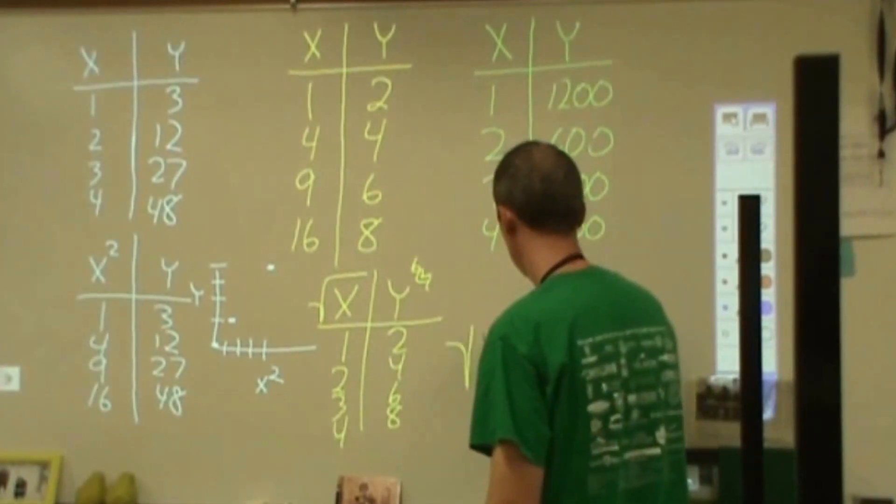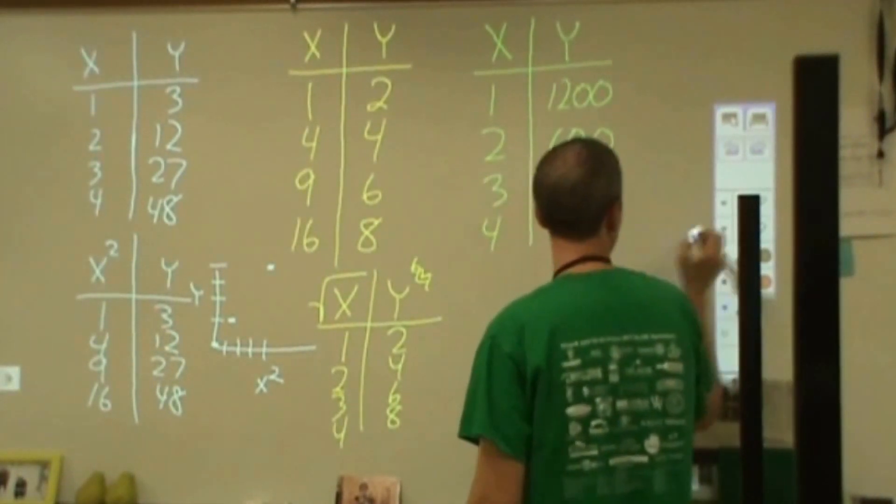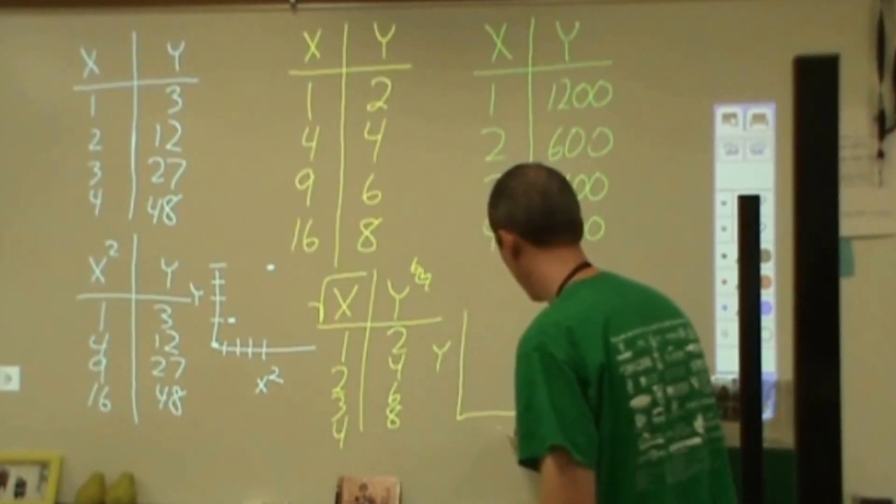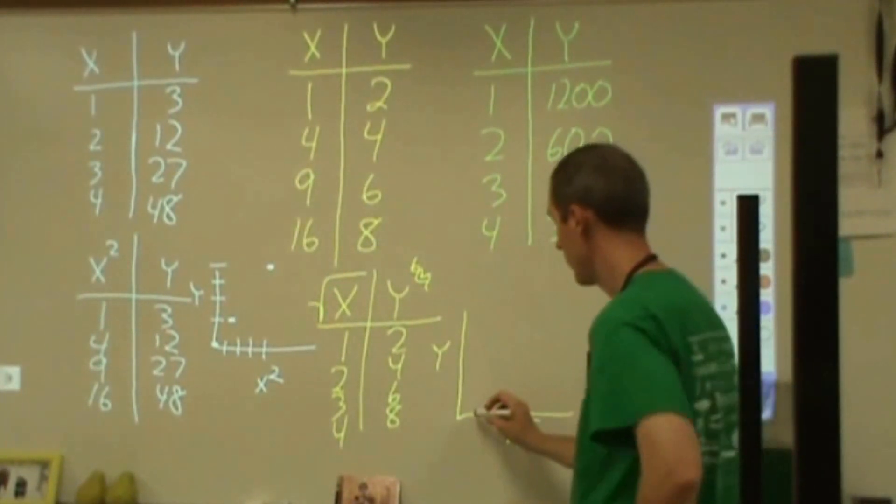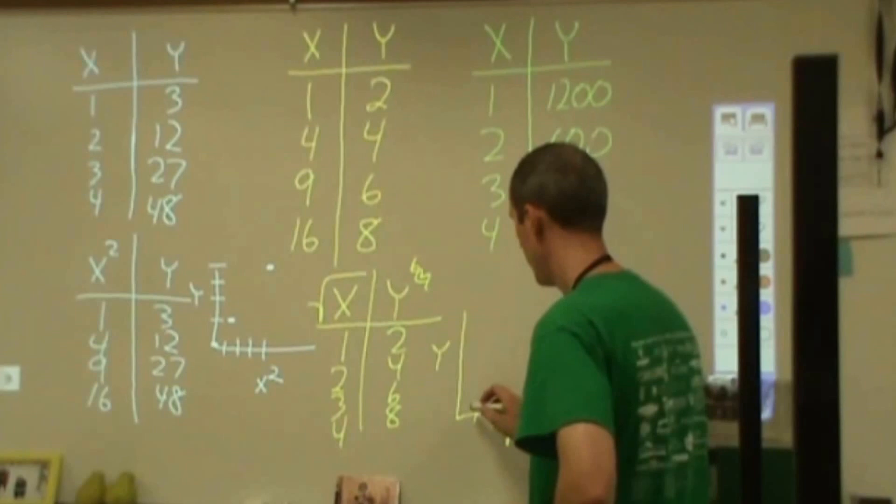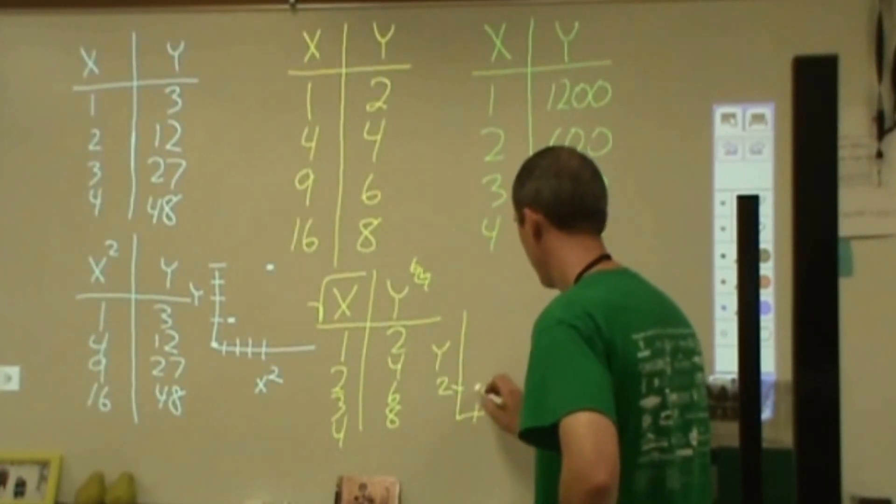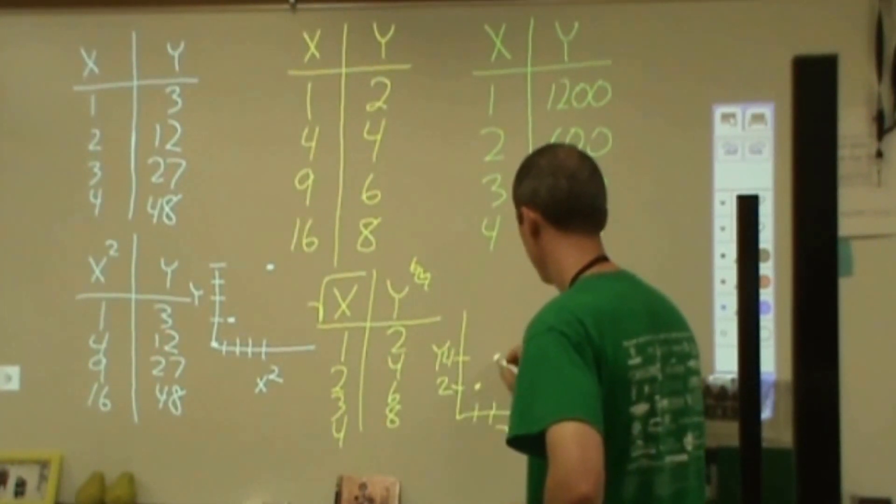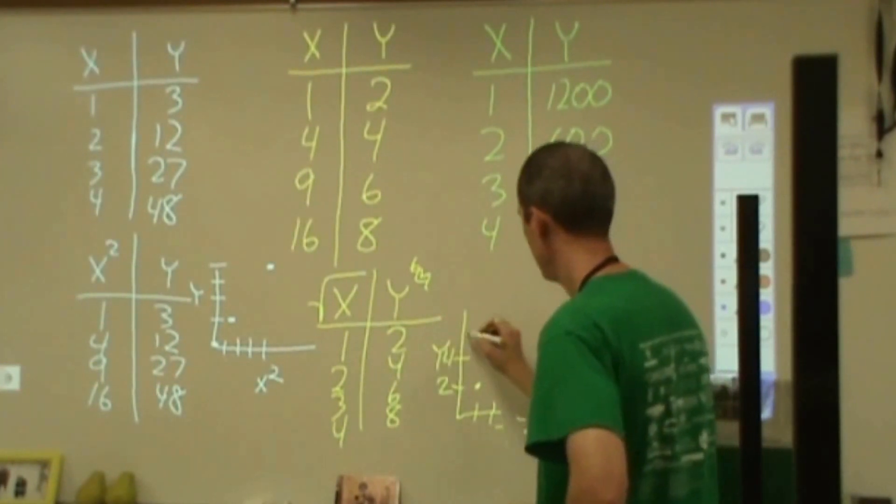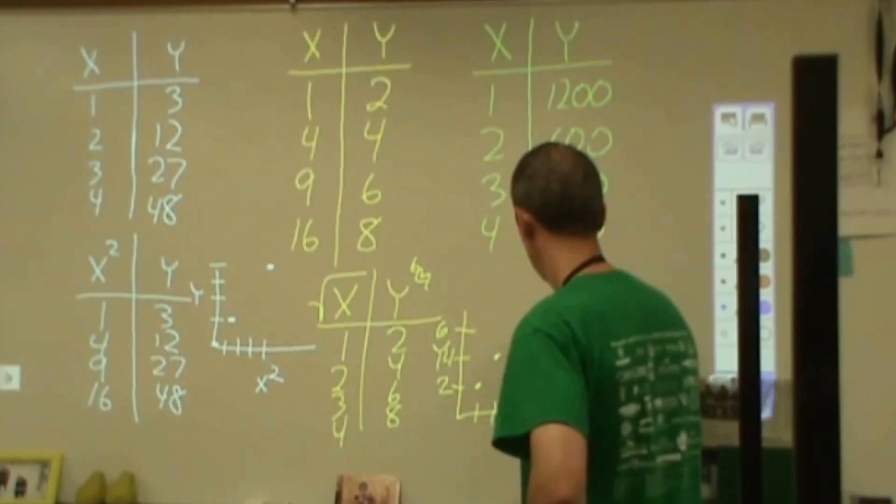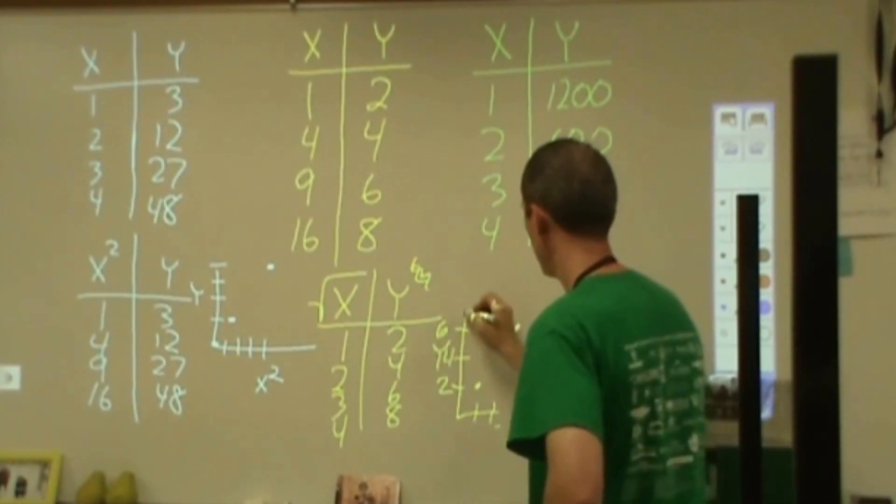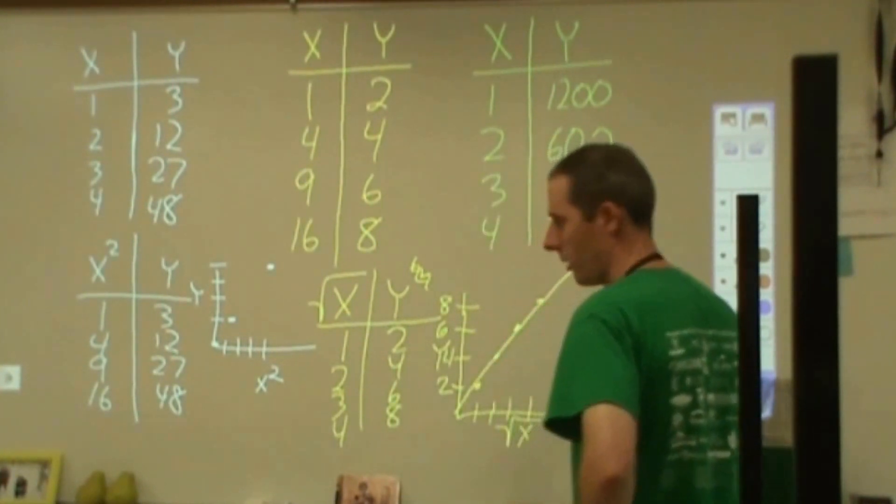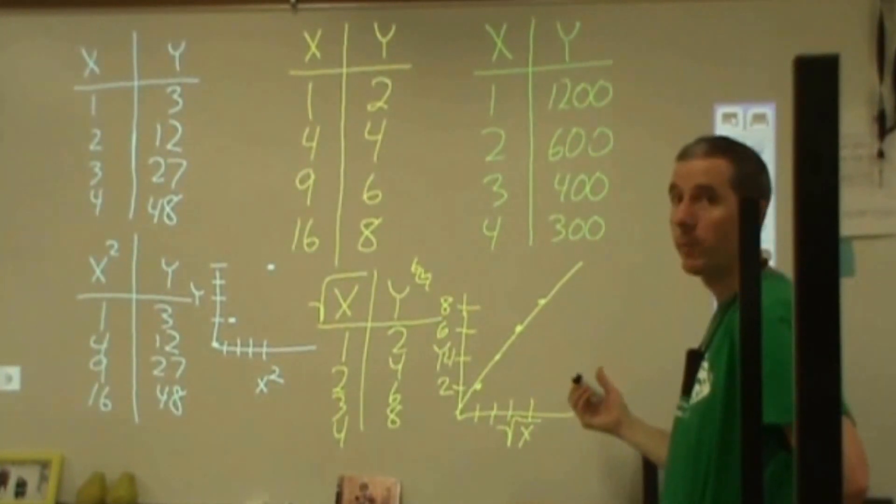So now if I go ahead and look at a plot where I plot y versus square root of x. Now I'm looking at square root of x. When square root of x is 1, then my y is 2. When square root of x is 2, now my y is double that, it's 4. When my square root of x is 3, my y is 6. And when my square root of x is 4, then my y is 8. So now I've turned a non-linear function into a linear function by squaring that one side.